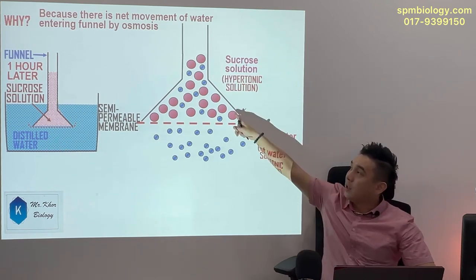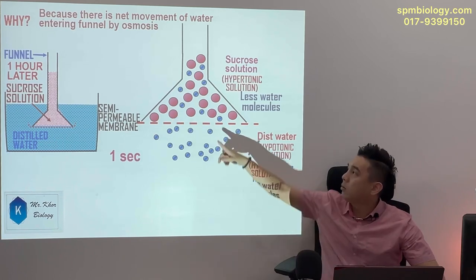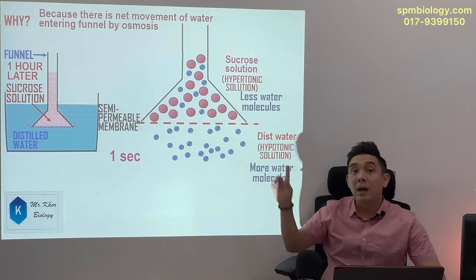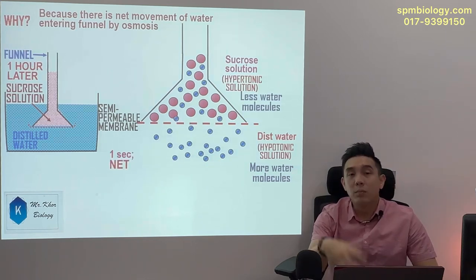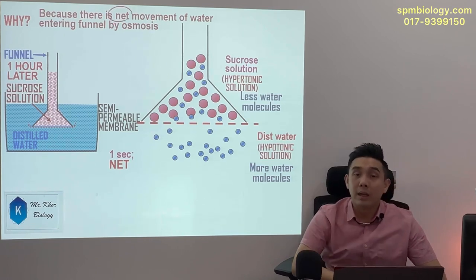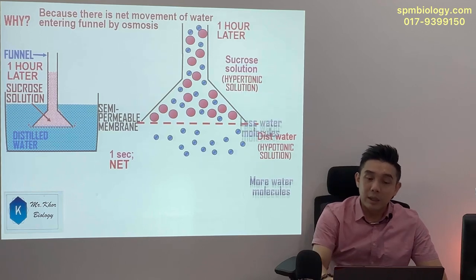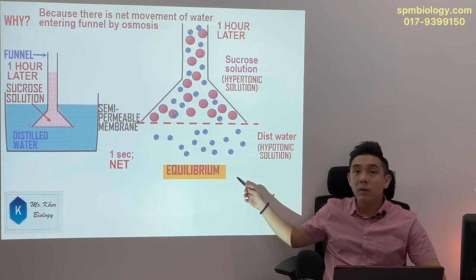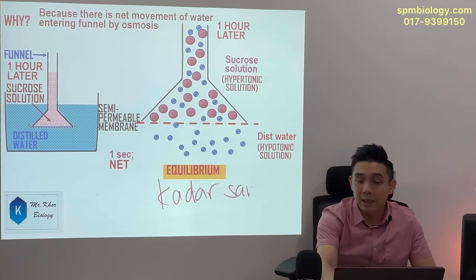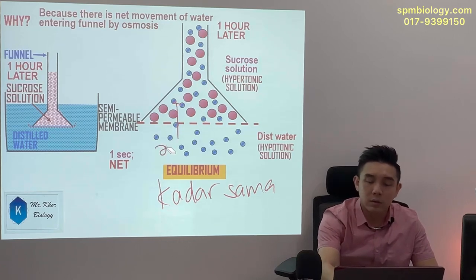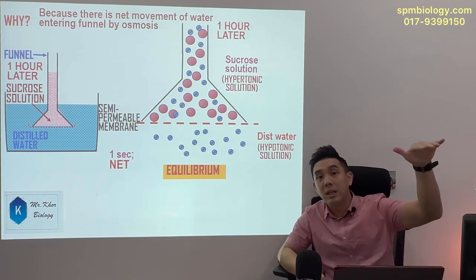If outside is hypo and inside is hyper, water enters. Is there water moving out? Yes — but because outside is hypo, more water is entering than moving out. So the net here means more water is entering. One hour later, it achieves equilibrium. Does water move in and out at equilibrium? Yes — but at the same rate. So if 50 molecules enter and 50 exit, we can cancel them off, meaning there is no change at all.